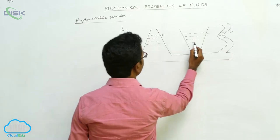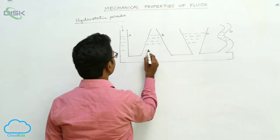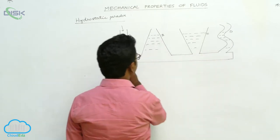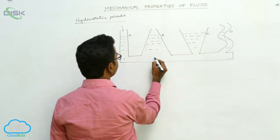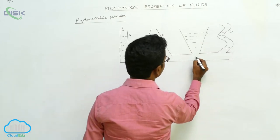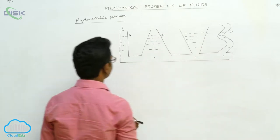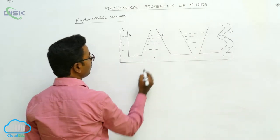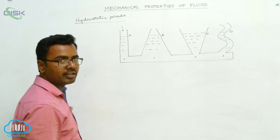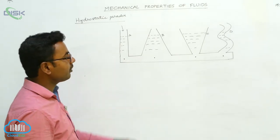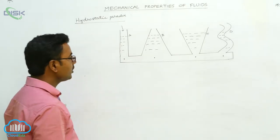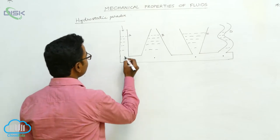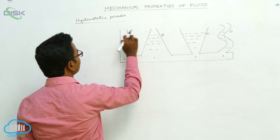How does this explain Pascal's law? Let us see. Here in this horizontal tube, let us consider four points. Now all these four points are at the same horizontal level. If they are at same horizontal level, there should be same pressure.